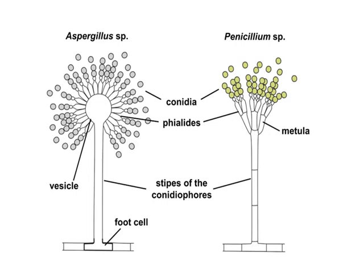Similarly, if we talk about Penicillium species, these are widely used to generate the antibiotic penicillin. When we look at their structural aspect, what we can observe is that these two groups of fungi basically contain long filaments which are termed as hyphae, and from these hyphae, long tubular structures arise that are called conidiophores.